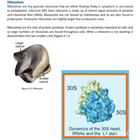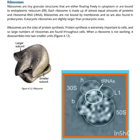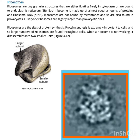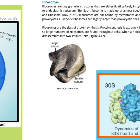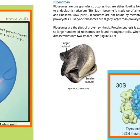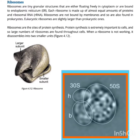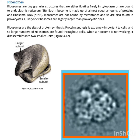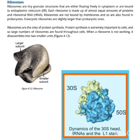Ribosomes are very tiny granular structures that float freely in the cytoplasm or are bounded with the endoplasmic reticulum. Each ribosome is made up of almost equal amounts of proteins and RNAs.